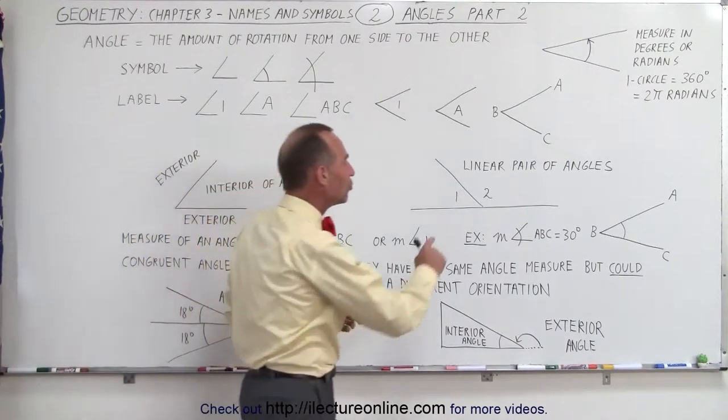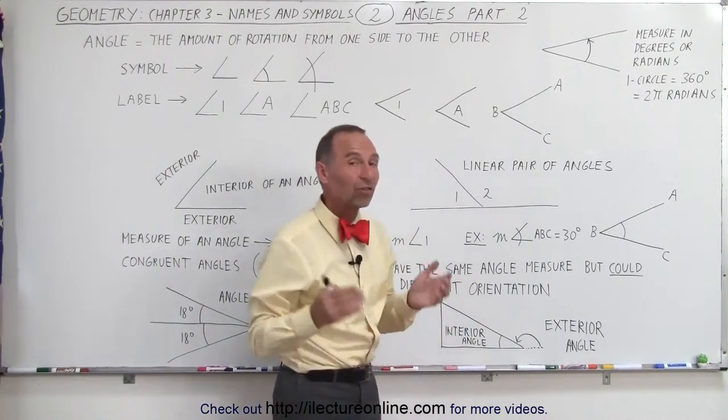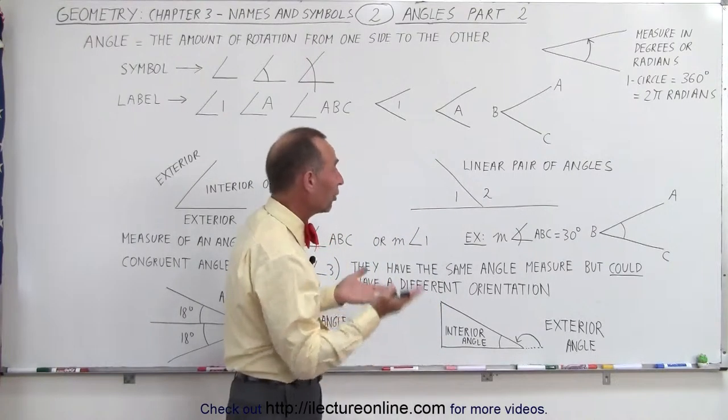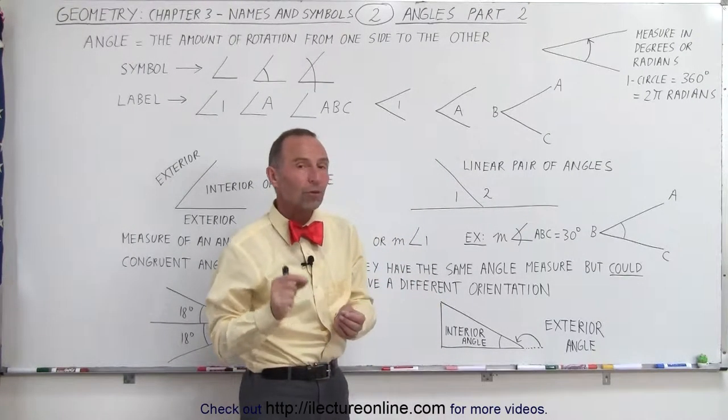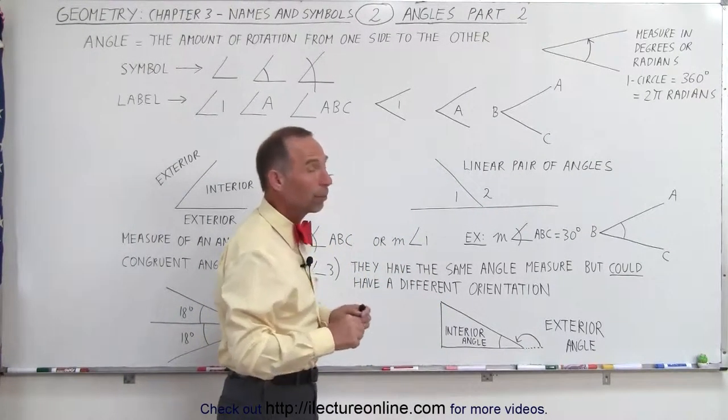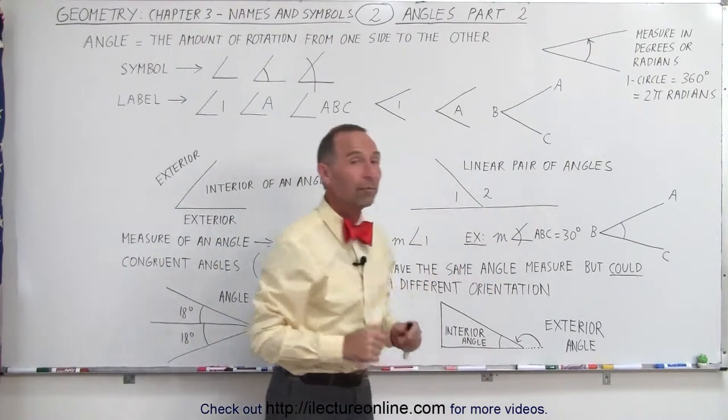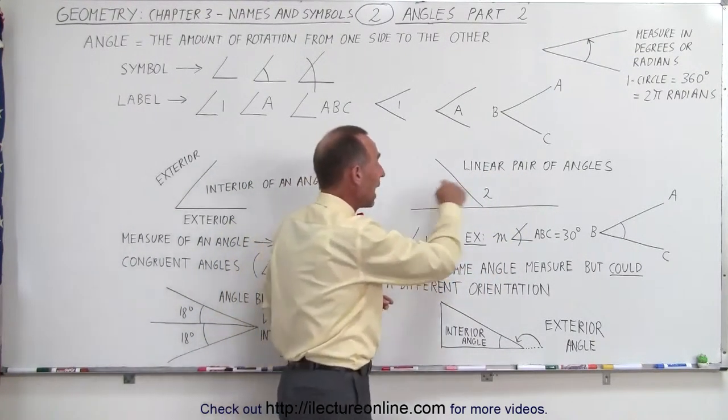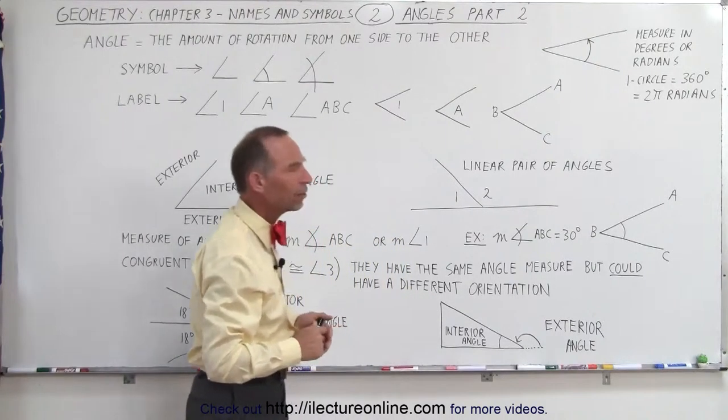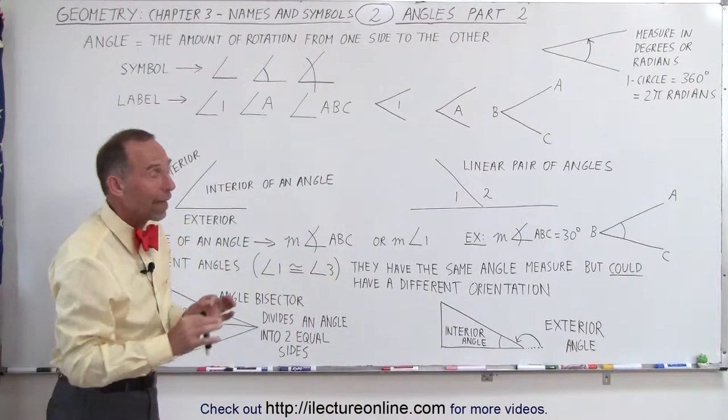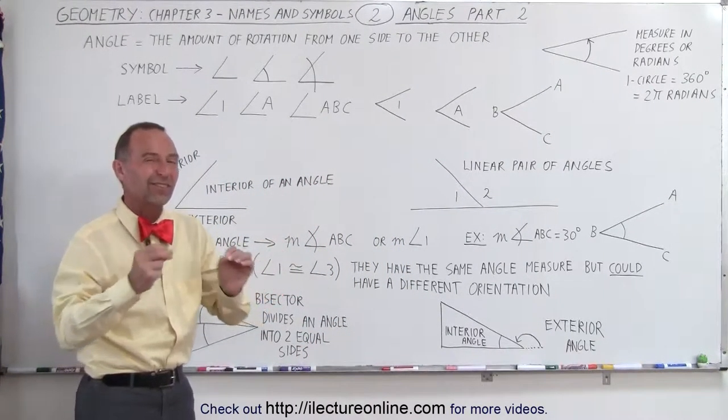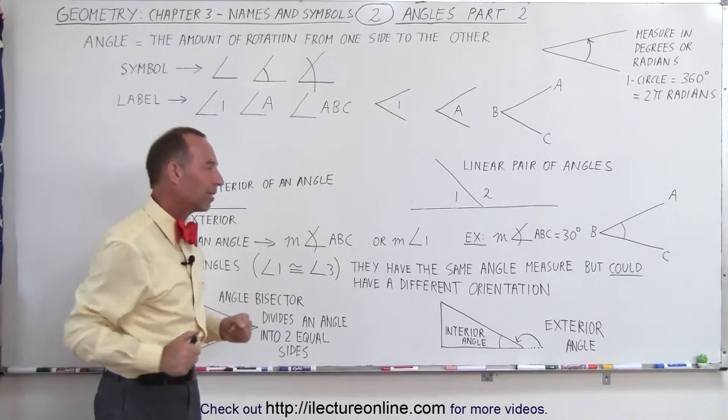Here notice that when we have two angles and the sum of the measures adds up to 180 degrees, we call them supplementary angles. They're also called a linear pair of angles because the two angles here side by side can be drawn next to a line. In geometry sometimes we have different names to express the same concept. Here's one example of that.